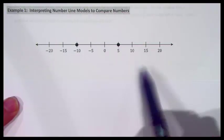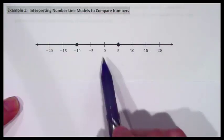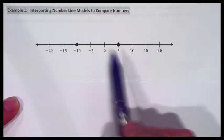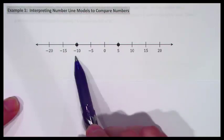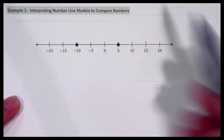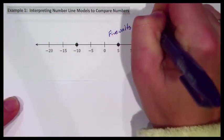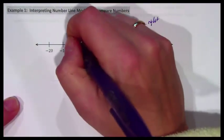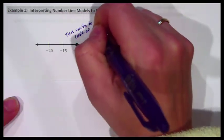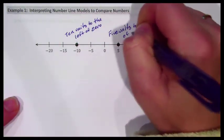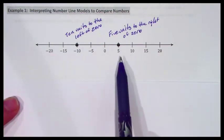When you look at a number line, you want to compare the locations of the numbers. I can see that 5 is 5 units to the right of 0. I can see that negative 10 is 10 units to the left of 0. That's how we talk about the location of numbers on the number line with clarity.